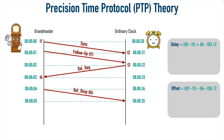Now we can plug into our formula. For delay, we calculate: ((T2 − T1) + (T4 − T3)) / 2. Using seconds: T2−T1 = 31−0 = 31, and T4−T3 = 3−32 = −29. So (31 + (−29)) / 2 = 2 / 2 = 1 second of delay — which is exactly what we see in the diagram. In the real world the delay would not be 1 second, but it makes the math easy to visualize.